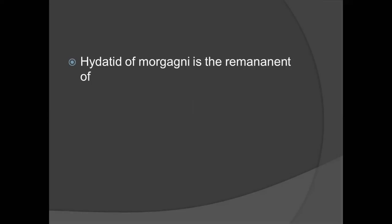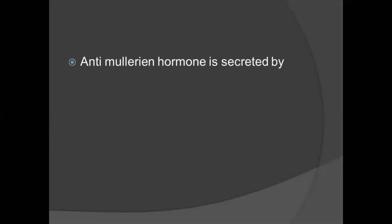Derivatives are very important in embryology. CVS chapter derivatives include the medial umbilical fold, ductus venosus, and dorsal mesentery — these are all very important for MCQ purposes. Anti-Müllerian hormone is secreted by Sertoli cells. The other possibility is that Sertoli cells produce anti-Müllerian hormone, which causes inhibition of FSH secretion.